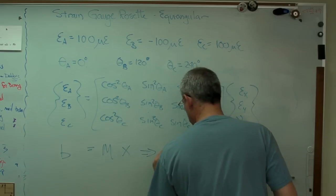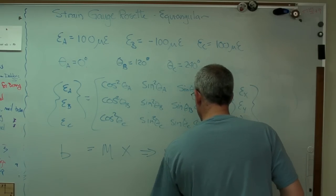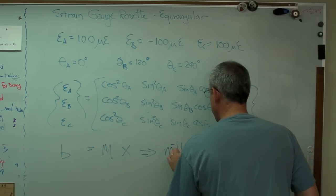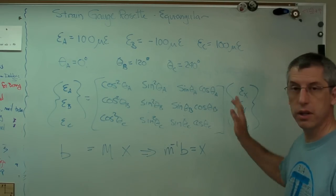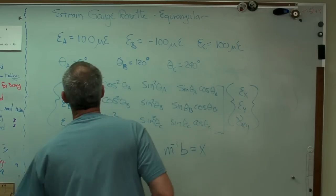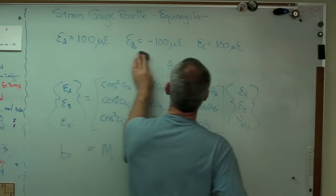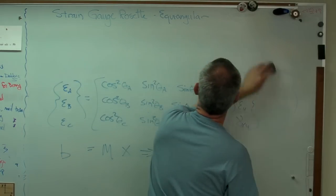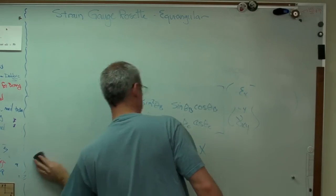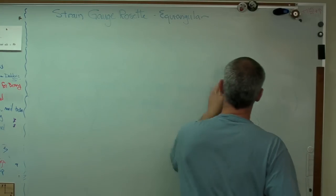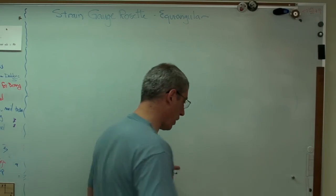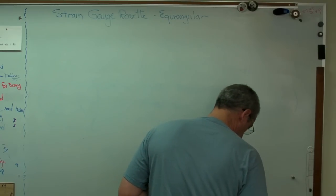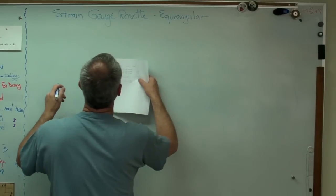So let me just erase this all because I've got this little board here and I'll write out the numbers for you. Now, remember, we're working in microstrain. I put microstrain in. I'm going to get microstrain out. Let me just write the numbers out for you.